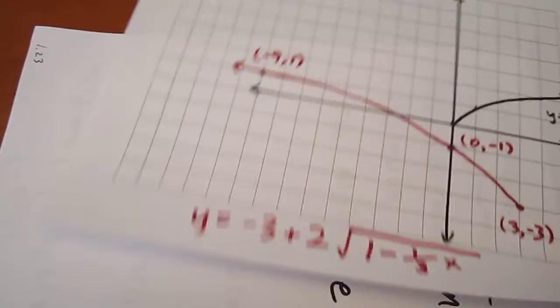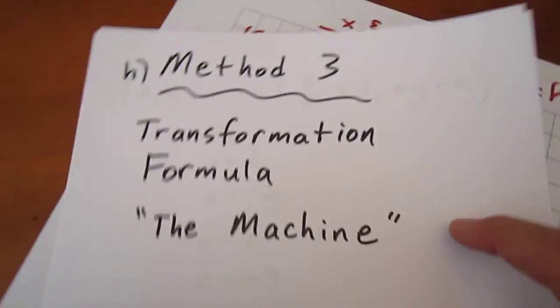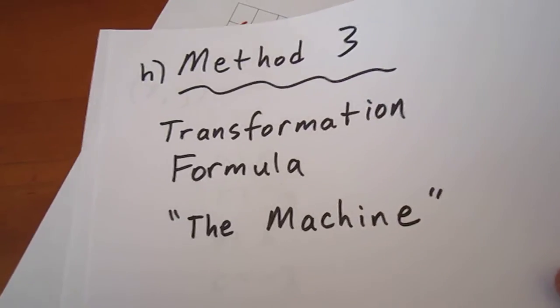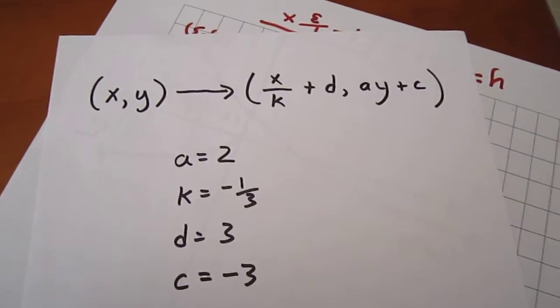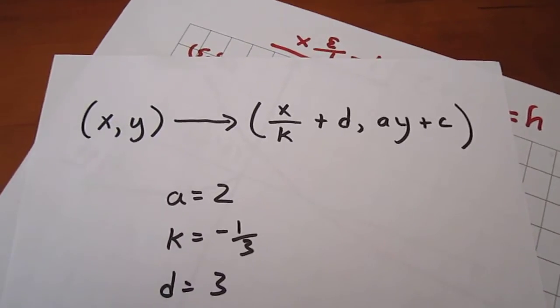Another method of doing it, and this is what we call method 3, and it was in part h, was what we call the machine, the transformation formula. And it's given by xy maps onto x over k plus d, a y plus c.